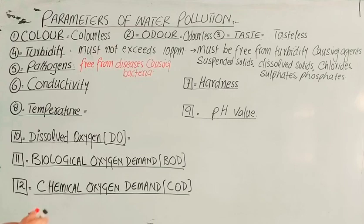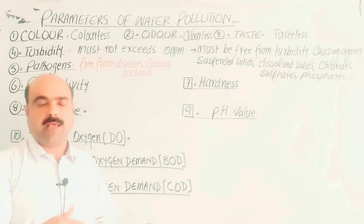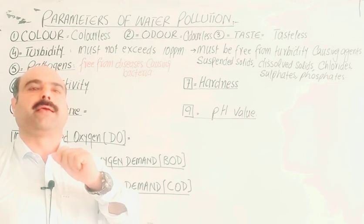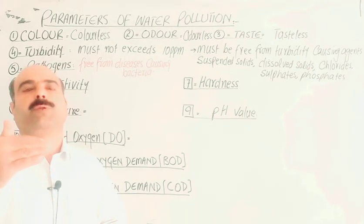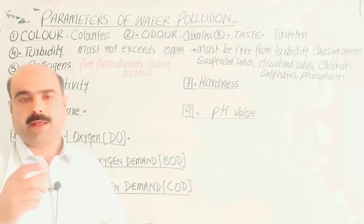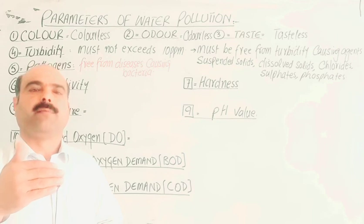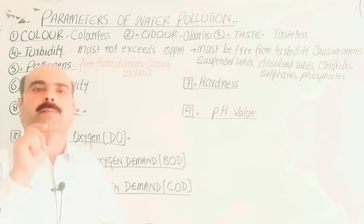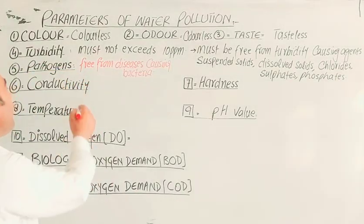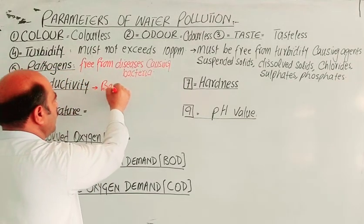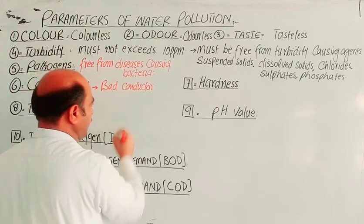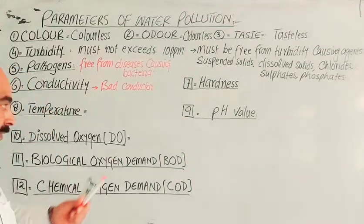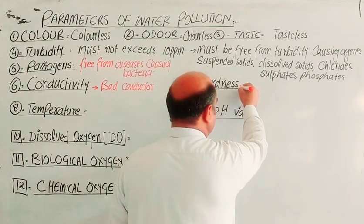Pure water must have no conductivity. Pure water has very low ionization — at 25 degrees Celsius, the ionization constant is 1×10⁻¹⁴. Because ions are essentially absent, there is no movement of ions, so pure water is a bad conductor of electricity. When dissolved mineral salts are present, conductivity increases. Therefore, pure water must have no conductivity.